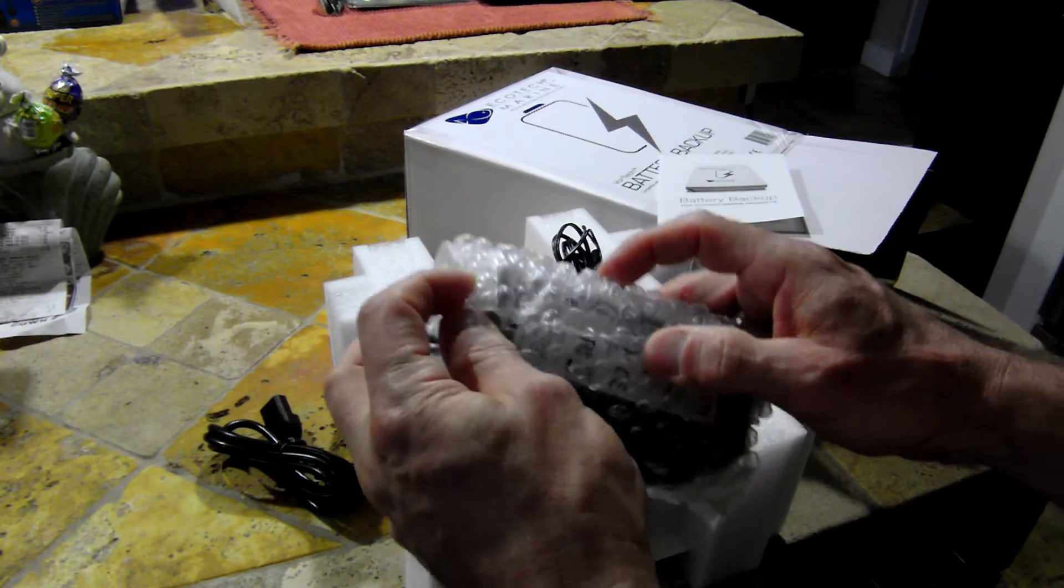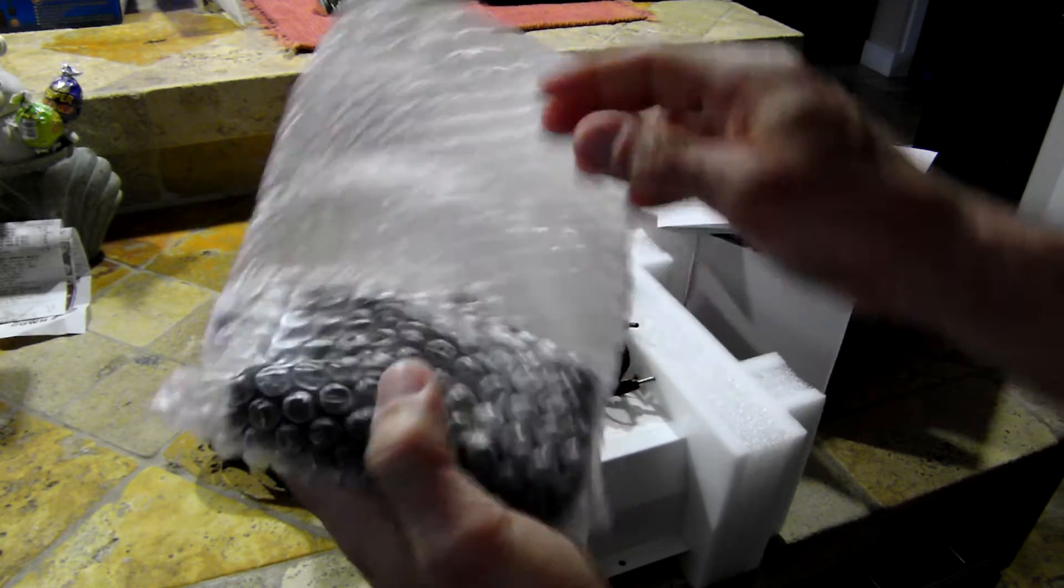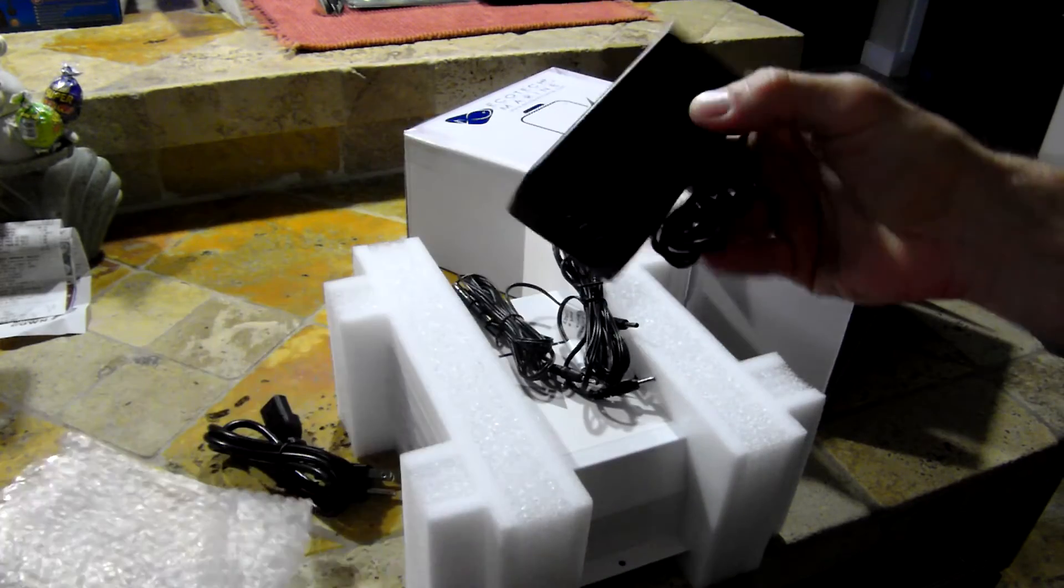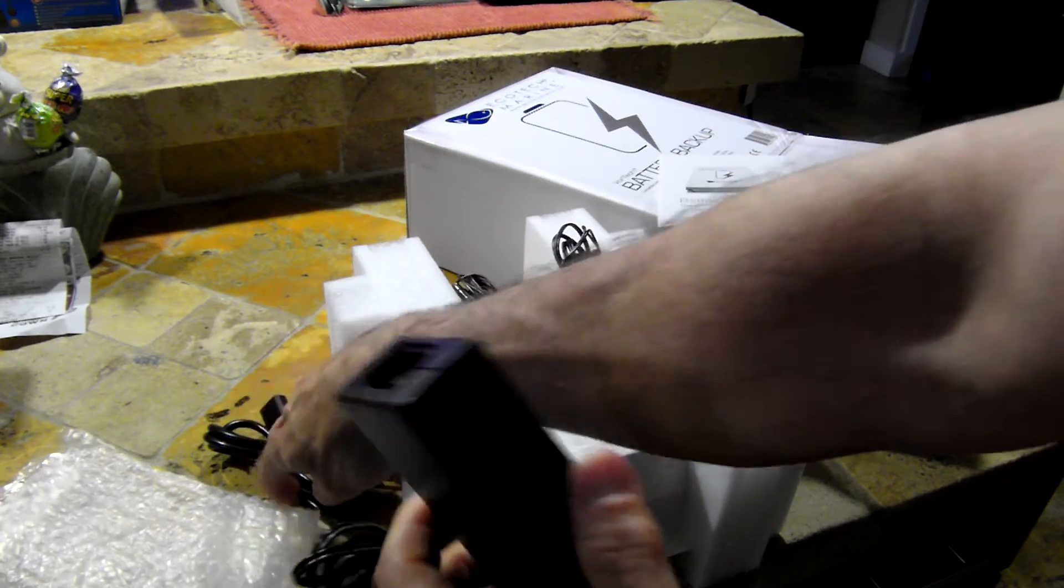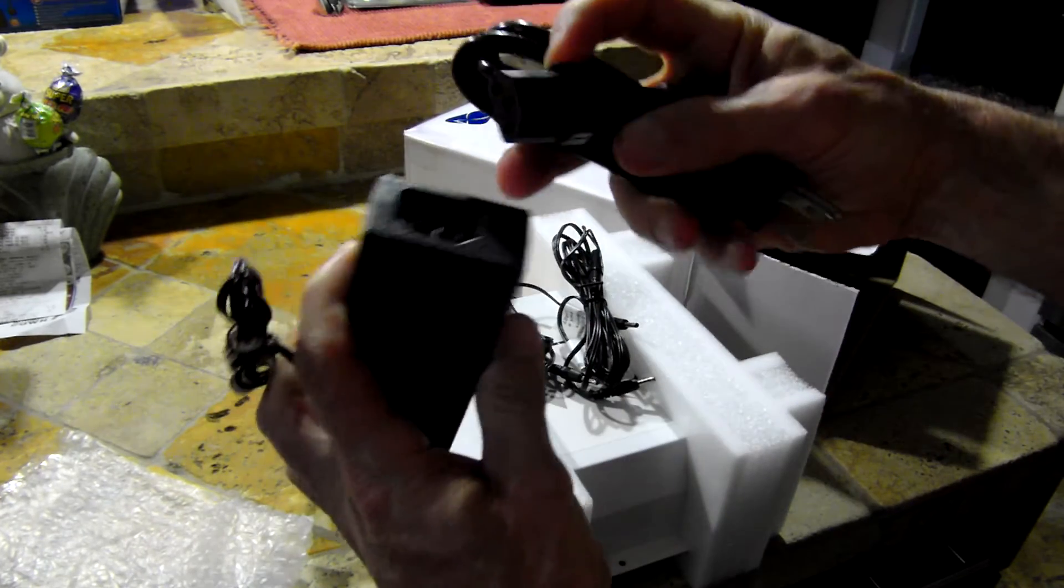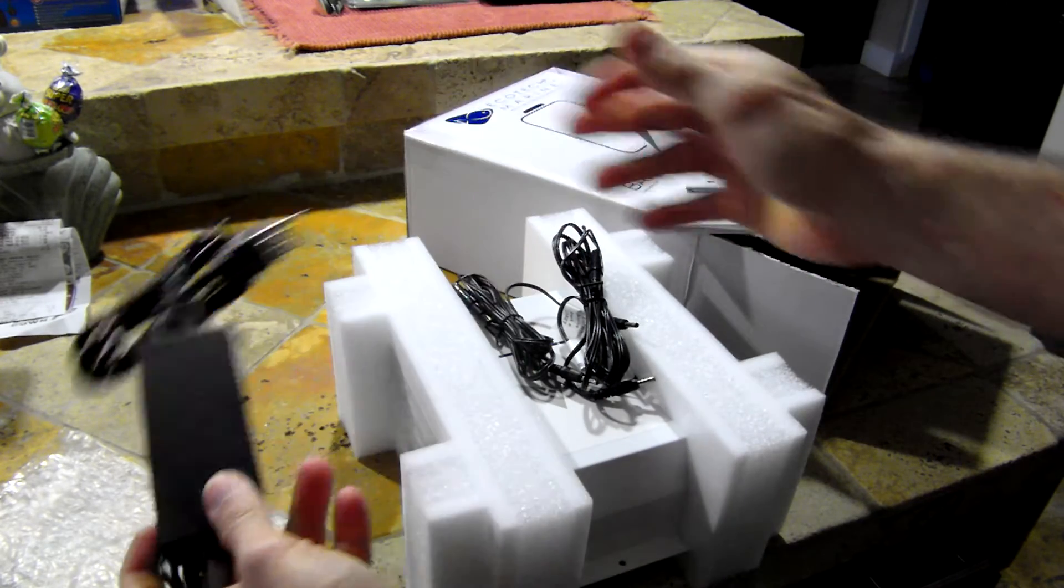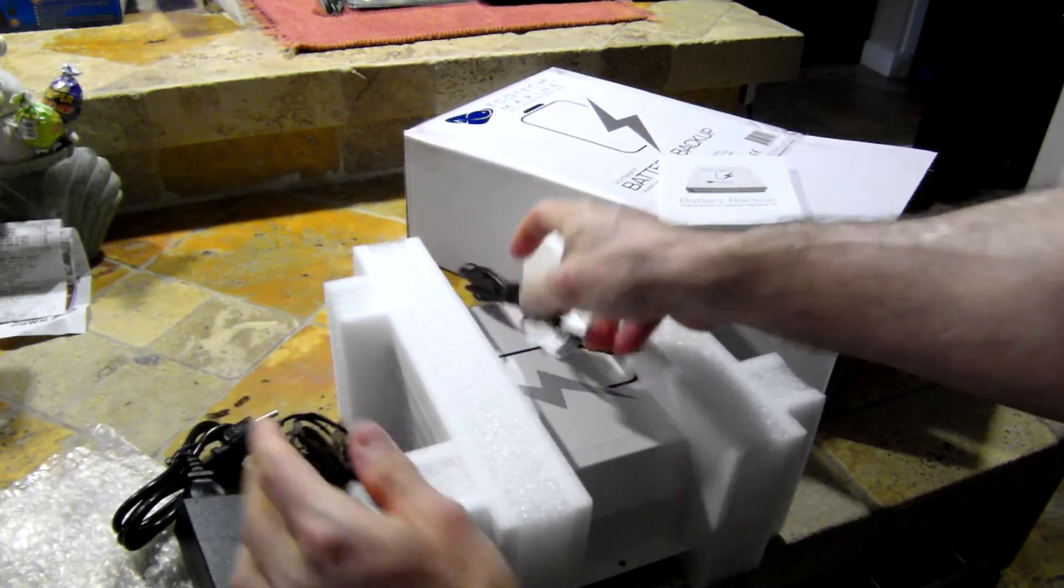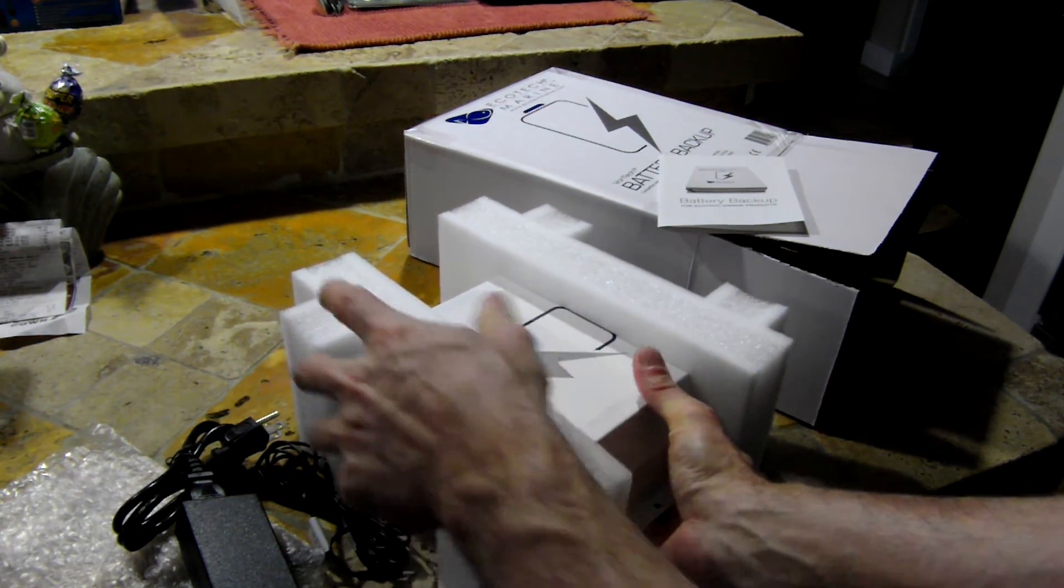Let's go ahead and take a look at the components here. The basic power brick, the power cord connects into the power brick. Let's go ahead and get these foam protectors off of the unit.